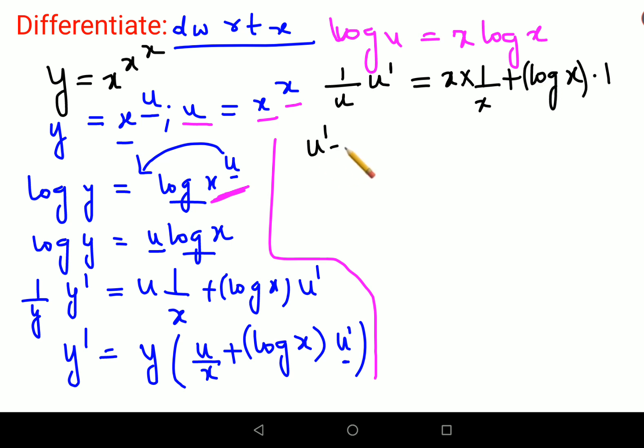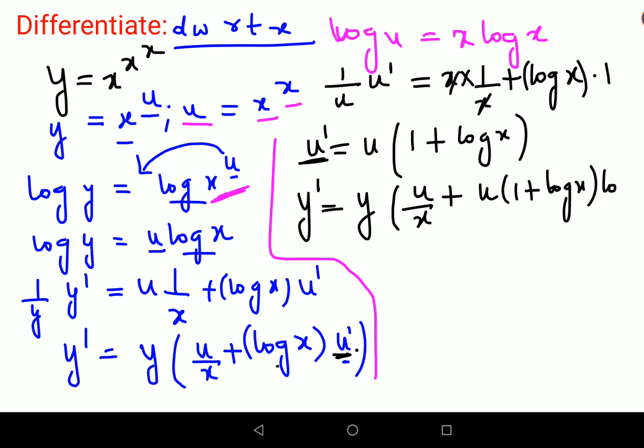So now your u' comes out to be u into - this x is getting cancelled - so 1 plus log of x. Let's write this value over here. So your final answer now comes to be - I'm not going to substitute it unless I simplify it as much as possible. You have y times (u upon x plus log x into u'), so I will just write y times u times (1 upon x plus log x times (1 plus log x)).